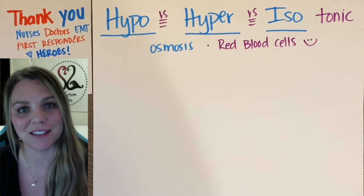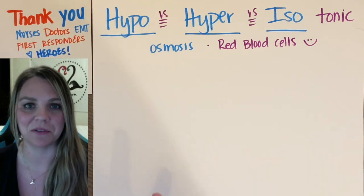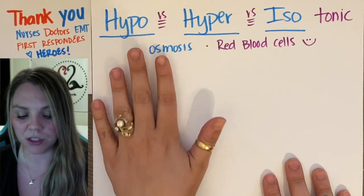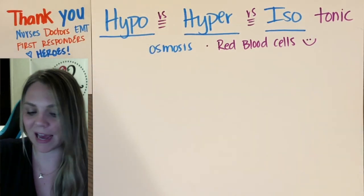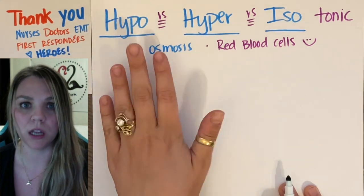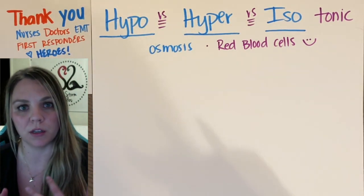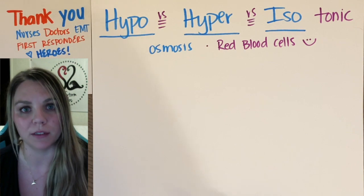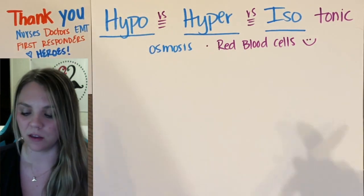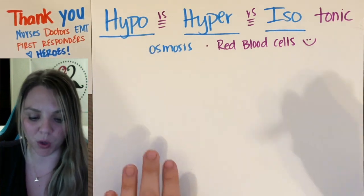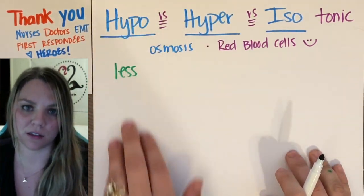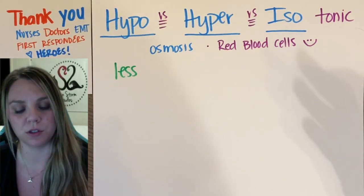This is very important for us to understand because we're going into the medical field. So in general, you have hypotonic solutions. Hypo means low — you're hypothermic when your body temperature is really, really low. Hypo means low, under, less. So a hypotonic solution has less concentration than the other solution around it.